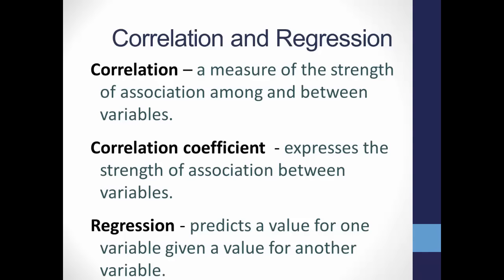We use Pearson's r, also known as Pearson's Product Moment Correlation Coefficient, for correlation, and r-squared for regression. Don't worry right now if you don't 100% understand the difference between the two — just know that they exist as we move on.